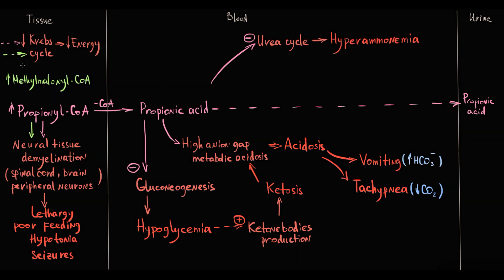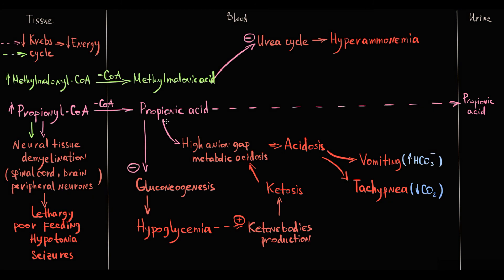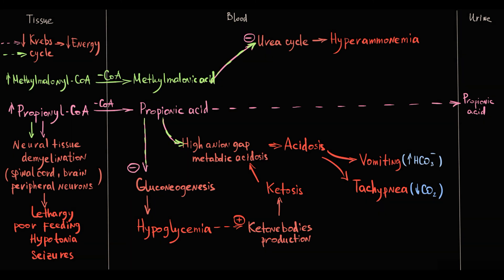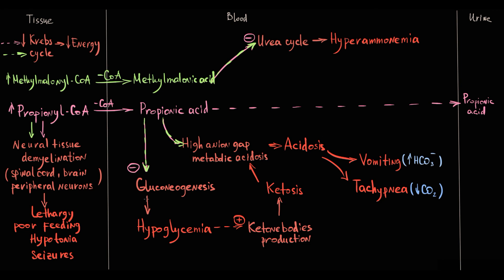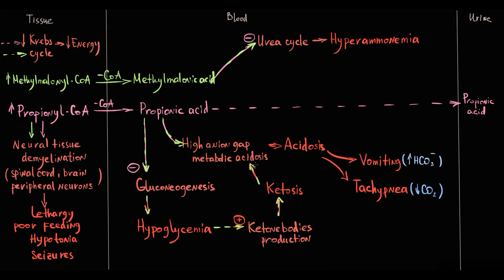From methylmalonyl-CoA and propionyl-CoA, coenzyme A is cleaved enzymatically, and large amounts of methylmalonic acid and propionic acid enter the circulation, resulting in methylmalonic and propionic acidemia. Accumulation of these two acids causes exactly the same metabolic changes as in propionic acidemia: high anion-gap metabolic acidosis, hyperammonemia from urea cycle inhibition, hypoglycemia from gluconeogenesis inhibition, hyperketosis from massive ketone body production by the liver, and further acidosis. Together, propionic acid, methylmalonic acid, and ketone bodies cause severe metabolic acidosis.